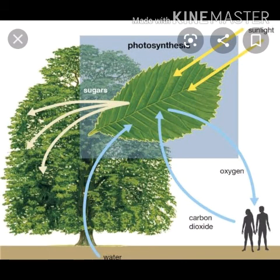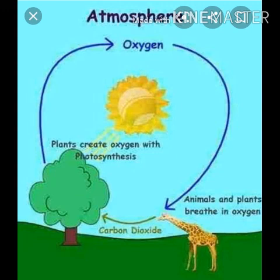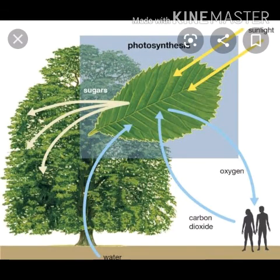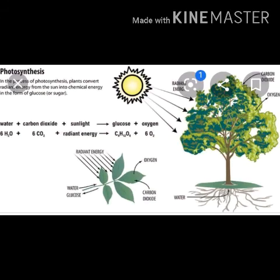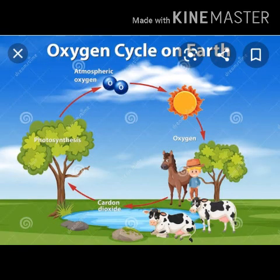Oxygen is produced in nature when green plants make food from carbon dioxide and water in the presence of sunlight by a process called photosynthesis, and the released oxygen escapes into the atmosphere. Green plants use CO₂ from the air and water from the soil to make food — mostly sugars (carbohydrates) — in the presence of chlorophyll and sunlight. The equation is: 6CO₂ + 6H₂O → C₆H₁₂O₆ (glucose) + 6O₂.